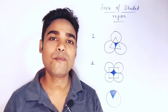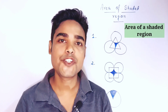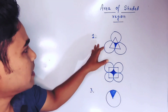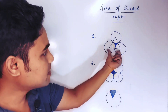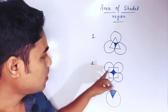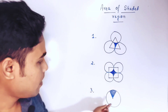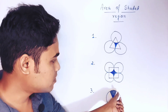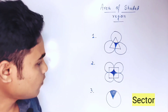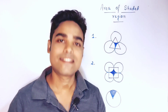Hi friends, welcome back to my channel. In this video I will discuss how to find out the area of a shaded region. I will discuss three different diagrams. In diagram one, we connected the centers of three circles to form a triangle. In diagram two, we connected the centers of four circles to form a square. In diagram three, we connected any two points on a circle's circumference with the center to form a sector.